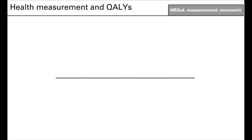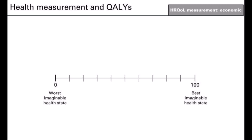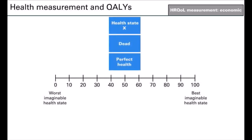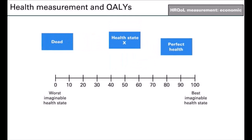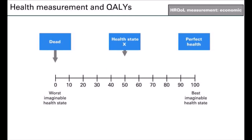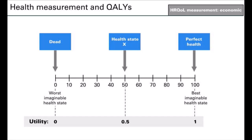Visual analogue scales are used to value health states using a single line on a page with verbal and numerical descriptors at each end. Scale markers are often added to the line and may be numbered. Respondents are presented with a set of health states including two reference states, usually dead and perfect health. They are first asked to rank the states in order of preference, and then to rate the desirability of each by marking a point on the line so that the intervals between states correspond to the strength of their preference. The reference states of dead and perfect health are defined as having utilities of 0 and 1 respectively, so the utility of the other health states can be calculated based on these.